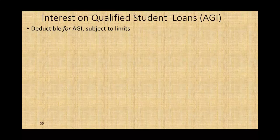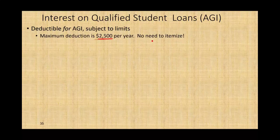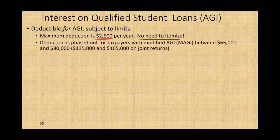Congress is generous to a point. Remember, most of us as students — when you just graduated from college — you're not going to have enough itemized deductions. So what Congress said is: we're going to give you a deduction, although you're not going to itemize. However, your deduction is limited to $2,500 and you don't need to itemize. Because if you're in your early, mid, or even late 20s, you may not own a home, you may not have interest expense or real estate taxes. So here's a deduction you can take for AGI. A deduction is phased out for taxpayers with modified AGI between $65,000 and $80,000.